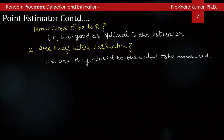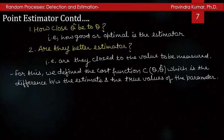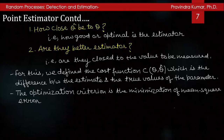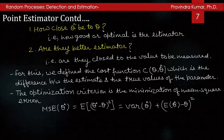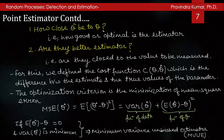How good the estimator is measured by a cost function c(θ, θ̂), which shows the difference between the estimate and the true value. In classical parameter estimation, the optimization criterion is minimization of mean square error (MSE), defined as E[(θ̂ − θ)²] = Var(θ̂) + [E(θ̂) − θ]². If E(θ̂) − θ = 0 and Var(θ̂) is minimum, then the estimator is called a minimum variance unbiased estimator (MVUE).